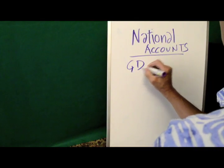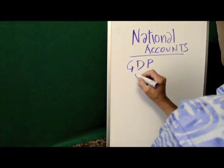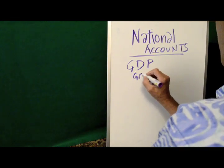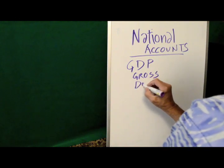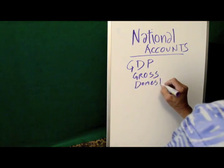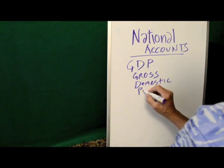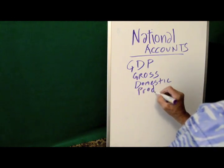National accounts are generally measured through GDP, or gross domestic product, but that has not always been the case. For example, the Soviet Union accounted for their national economy on the Material Product System, or MPS.